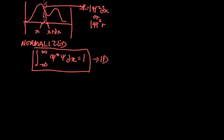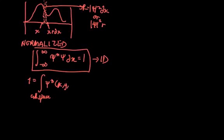For three dimensions, we have 1 equal to our integral over all space applied to our complex conjugate in x, y, and z including t, and on the other side we have our wave function that acts on x, y, z, and t. Don't forget the tau over there.